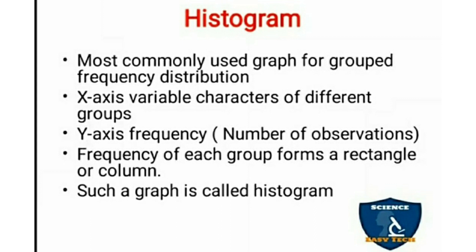You have X axis which represents variable characters and Y axis which represent number of observations. That is frequency of each group will be forming a rectangle or color or a bar. Such a graph is called Histogram. It is most commonly used graph. Mainly, it is used for group data, that is in continuous series.